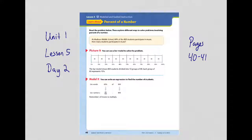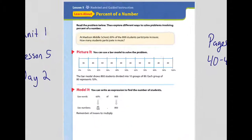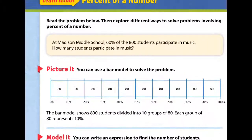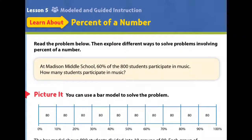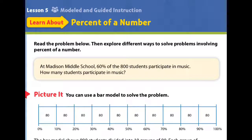Let's get started. We're going to read the problem at the top of page 40 — follow along with me — and then we're going to talk about ways to solve it. Here's what it says: at Madison Middle School, 60% of the 800 students participate in music. How many students participate in music? So I'm going to circle that percentage: 60% of the 800 students.